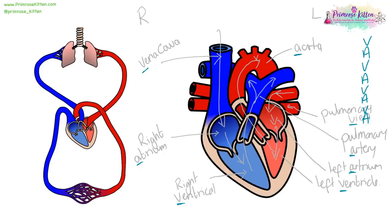Other features of the heart: the valves only allow blood to flow one way. The left side has a much larger muscle than the right side — the right only needs to pump blood to the nearby lungs, while the left has to pump blood to the rest of the body. Veins mostly carry deoxygenated blood, apart from the pulmonary vein which carries oxygenated blood back into the heart. Arteries mostly carry oxygenated blood, apart from the pulmonary artery which carries deoxygenated blood from the heart to the lungs.